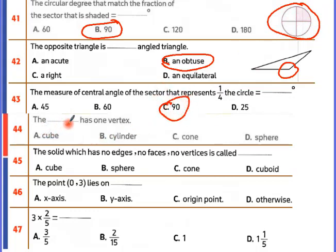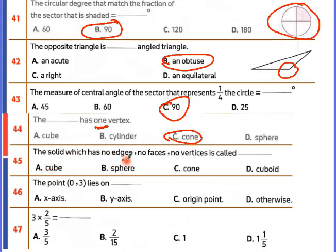The solid which has one vertex — that's the cone. The solid which has no edges, no faces, no vertices — it's a sphere.